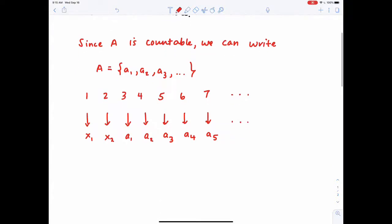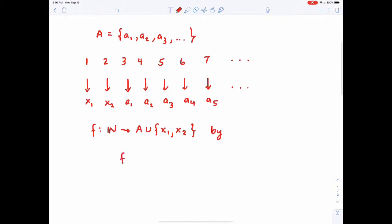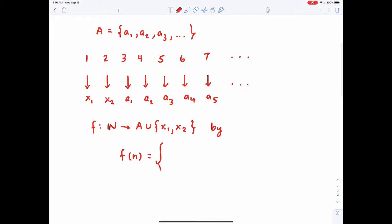So if I wanted to write this down, I could say I am creating a bijection from the natural numbers to A union x₁, x₂. By, if I plug in f of n, that's going to be xₙ if n equals 1 or 2. Like if I plug in 1, that's going to go to x₁. If I plug in 2, that should go to x₂. And other than that, it goes to aₙ₋₂ if n is greater than or equal to 3, because then I need to cover my tracks there and hit all of the values in the set A.